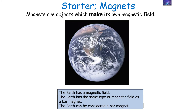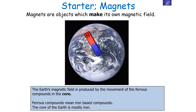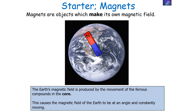The earth has a magnetic field, and it has the same type of magnetic field as a bar magnet, so we can consider the earth to be a bar magnet because the magnetic field of the earth is very similar to the magnetic field of a bar magnet. The earth's magnetic field is produced by the movement of ferrous, or iron-based, compounds in the earth's core. Since the core of the earth is mostly iron and iron is magnetic, this allows the earth to have a magnetic field.